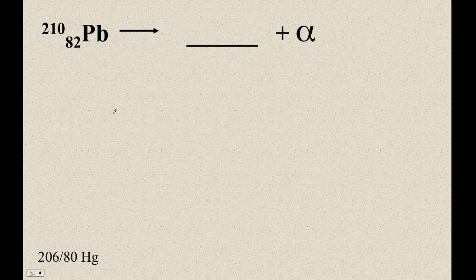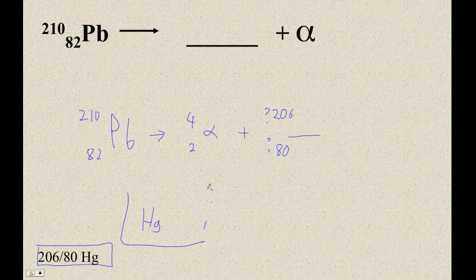So here's an example. We've got lead. And it's 210 and 82. And it's going to turn into a 4, 2 alpha particle. Plus something. That's like question mark, question mark. And this is, you know, this is how hard nuclear reactions are. Well, this thing's got to be at 206 because 210 is 4 plus 206. And then this has to be 80. And then 206, 80 is mercury. So, that's as hard as balancing nuclear reactions is.